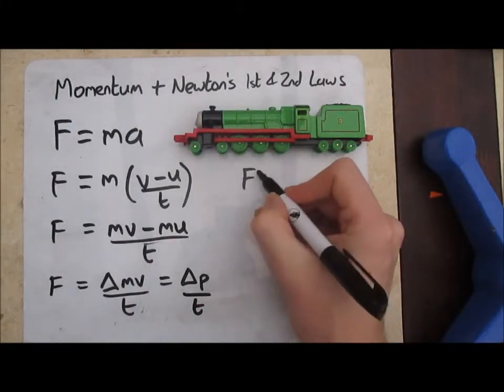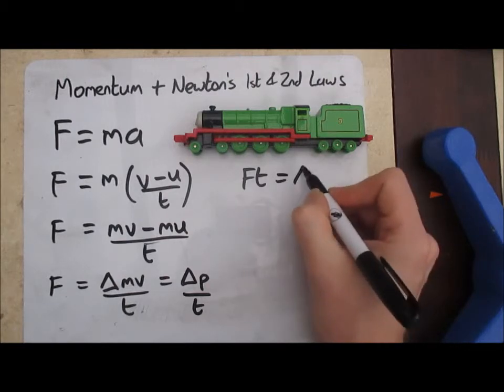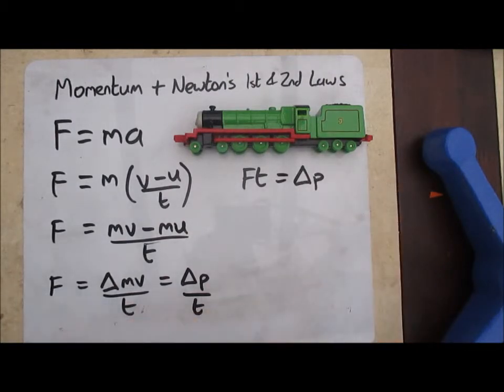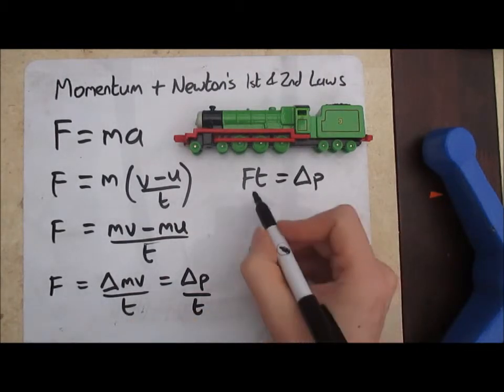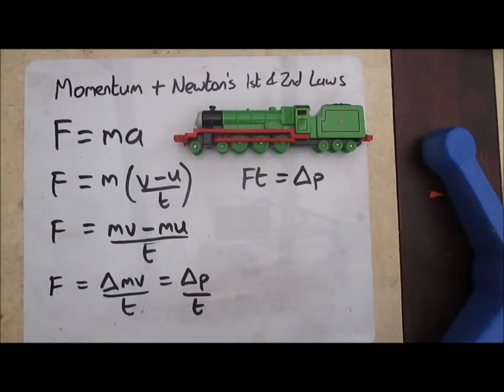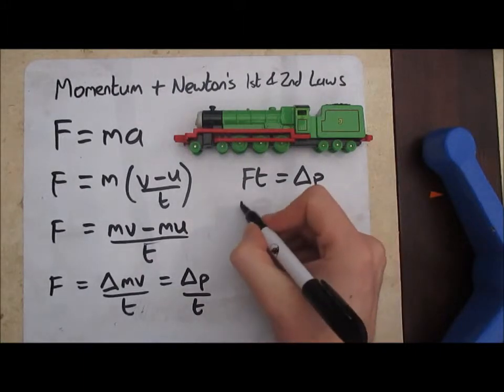We can also have a little bit of a play around with this equation and rearrange it, so if we've got Ft equals delta p, then the quantity here Ft is also known as the impulse, where the impulse is what's required to change the momentum, so impulse and change in momentum being the same thing here.